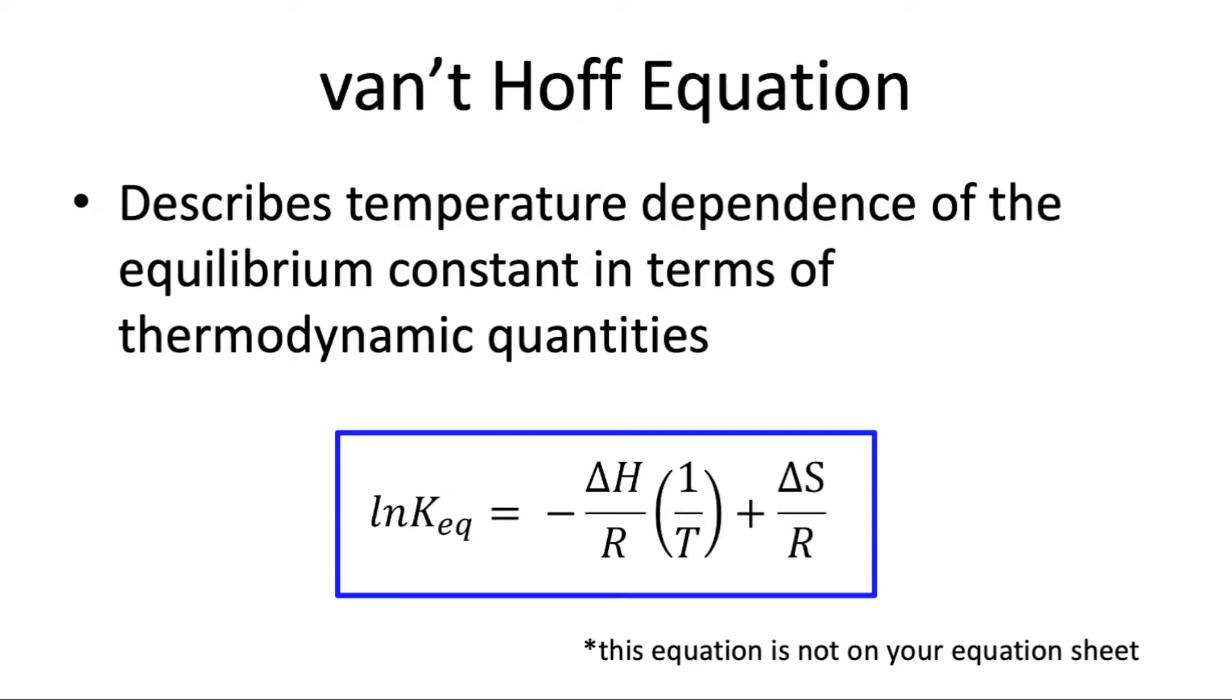Now what does this mean about how our graph of ln KEQ versus 1 over T will look for different types of reactions? Well if we have an exothermic reaction then the value of delta H will be negative and so the slope will be positive. And if we have a reaction that's endothermic our delta H is positive and our slope will be negative.